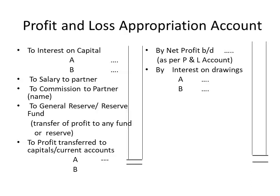Now, if you look at the structure of this account: on the credit side we have net profit and interest on drawings. The journal entry for net profit is profit and loss account debit to profit and loss appropriation account. Similarly, for interest on drawings, the entry is interest on drawings account debit to profit and loss appropriation account. For interest on capital, the entry is profit and loss appropriation account debit to interest on capital.